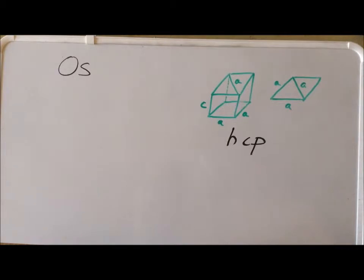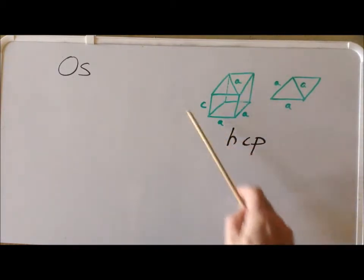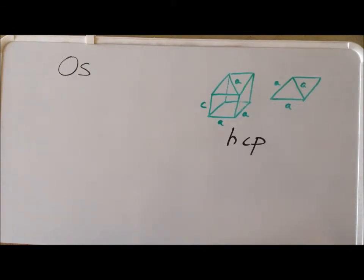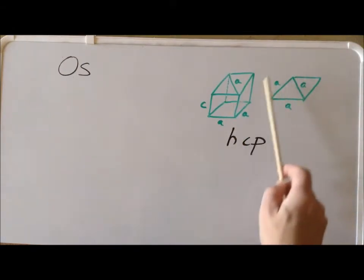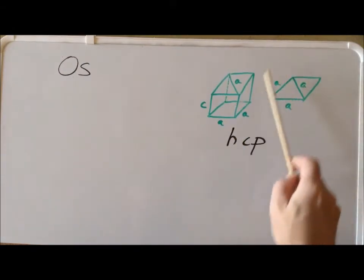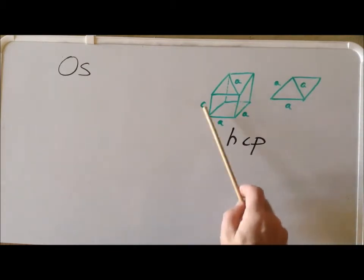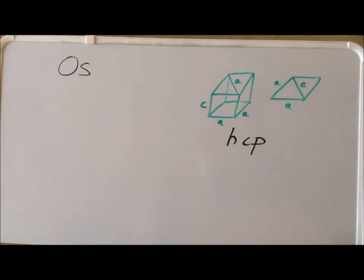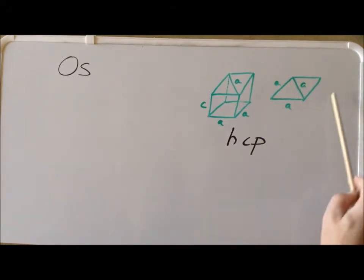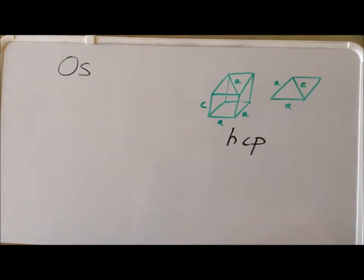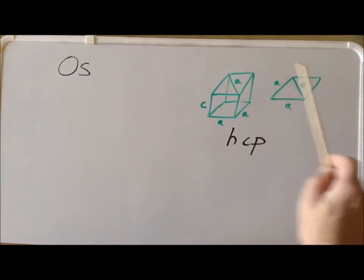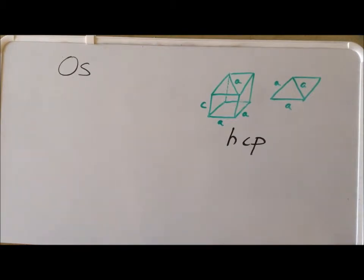We can treat this as if it were a prism, and we're going to compute the area of the base, which is a rhombus, and multiply it by the height to get the overall volume of the unit cell. We can also think of this rhombus as being two equilateral triangles that have been merged together, and we're going to use that fact to compute the area of the rhombus.